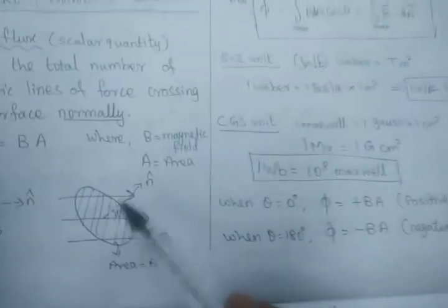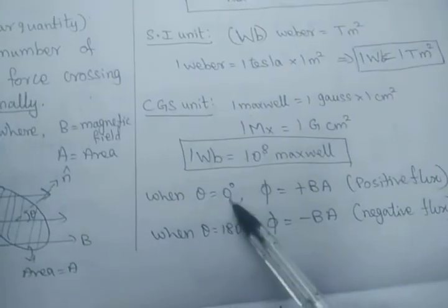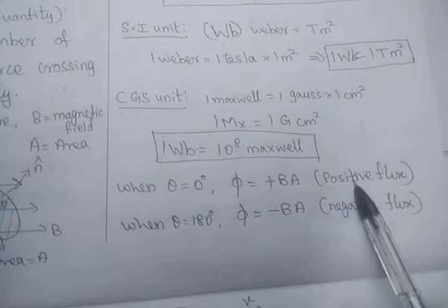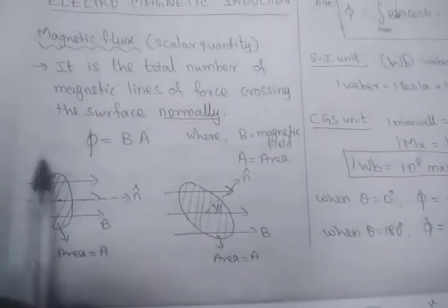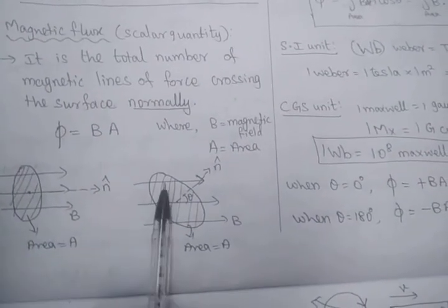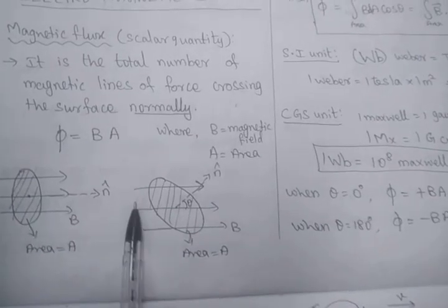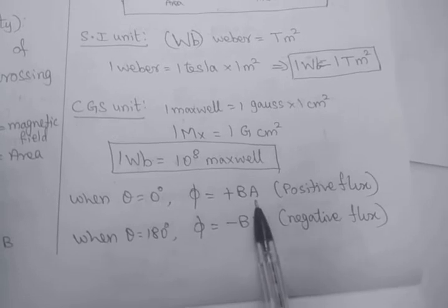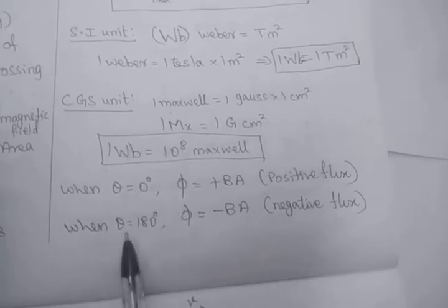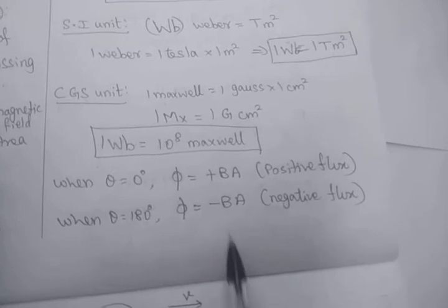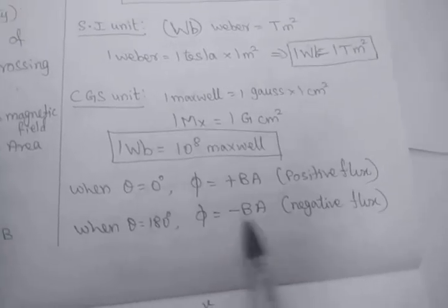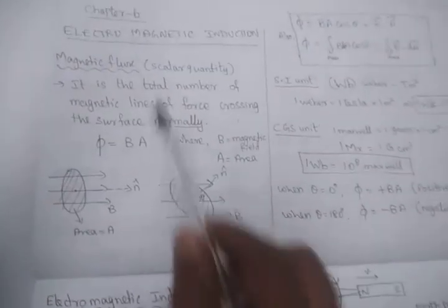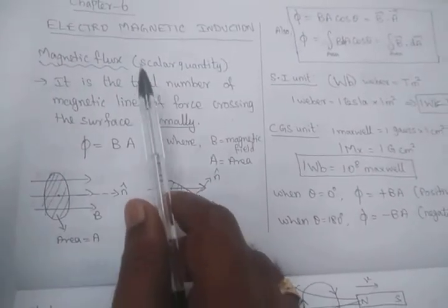When theta makes an angle of zero with the flux, that flux is called positive flux. In this case the area vector is parallel to the magnetic field vector, the angle is zero, hence pi is equal to plus BA. Then when theta is 180 degrees, pi is equal to minus BA, which denotes negative flux. So very clearly we have studied about magnetic flux.